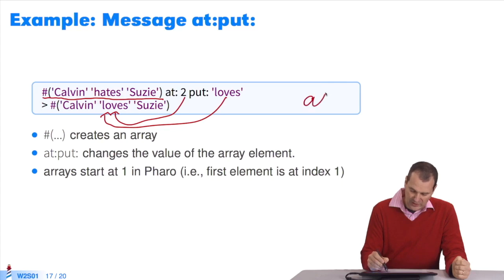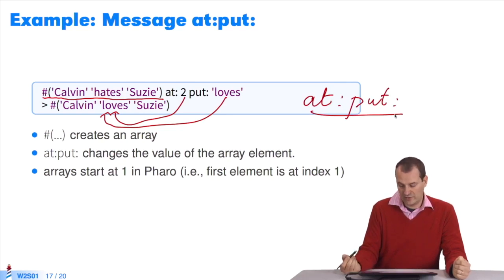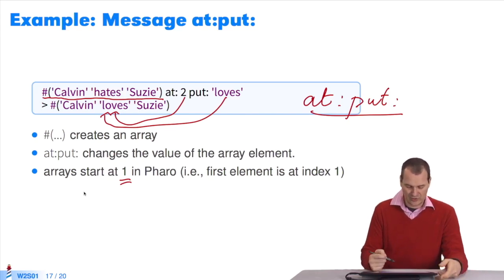About arrays. You can see the method is called at put. This method changes the value of a collection at a given index. As you can see, collections start at 1 in Pharo, not at 0. I want the second element, so I count 1, 2. You don't have to subtract anything.